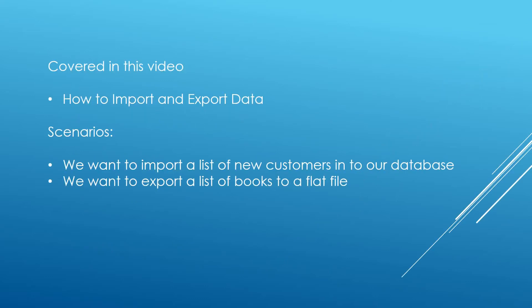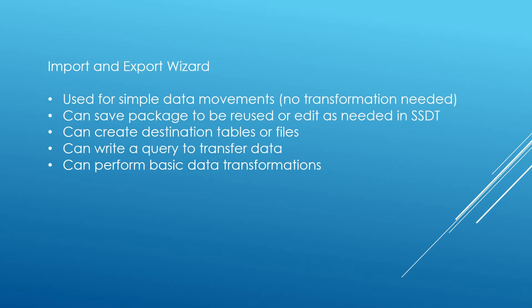What are we going to be looking at today? We're going to look at how to import and export data. The scenarios we want to go through are importing a list of new customers into our database, and then exporting a list of books to a flat file or CSV. The Import and Export Wizard is used for simple data movement — no transformations needed. If we just want to get data from one place to another, from a flat file to our database or from an Excel file to our database, this wizard can do that. We also have the option to save the packages to be reused, or we can edit them and add transformations in the future using SQL Server Data Tools.